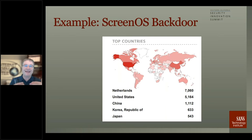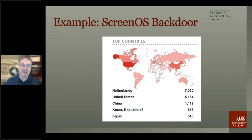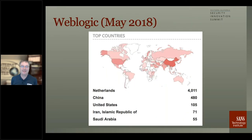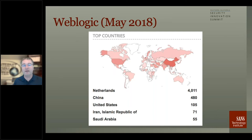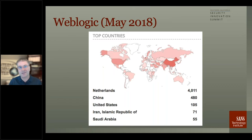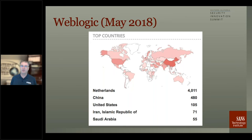We deployed a prototype system with a large ISP in the Netherlands. We can turn these honeypots into whatever system we want them to look like — here's an older example with ScreenOS. Notice how the Netherlands appears as the most vulnerable country. This graph is from Shodan. The same approach worked with WebLogic — a vulnerability from 2018. We told our honeypots to behave like WebLogic, and suddenly the Netherlands appeared to have ten times the WebLogic systems that China has. We can really saturate the internet with vulnerable systems, which gives us tremendous access to data.